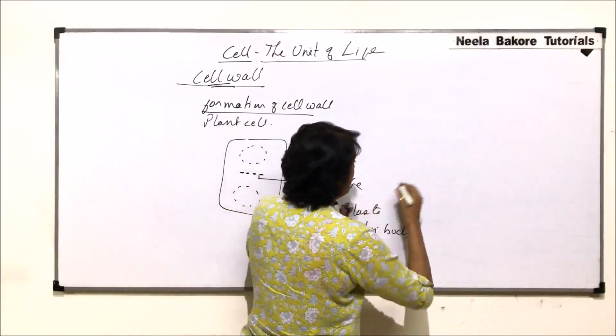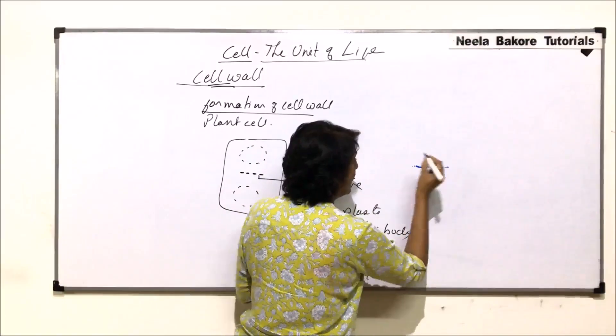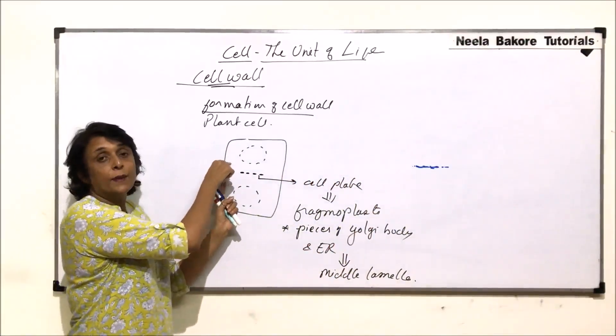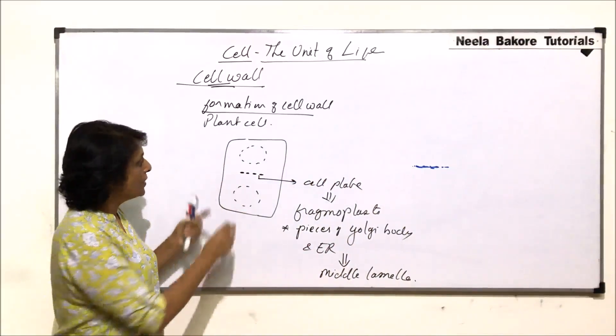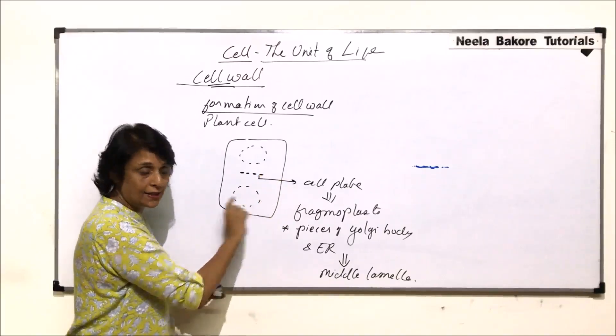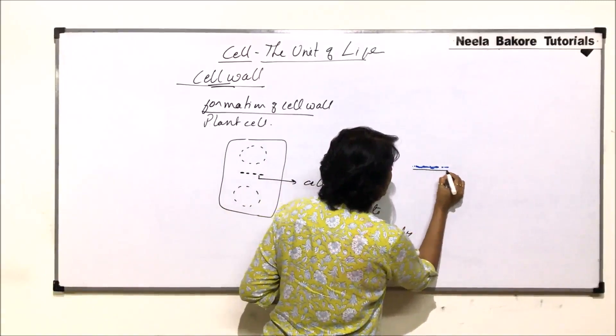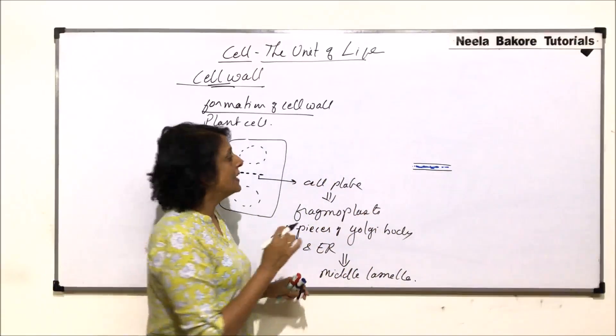Phragmoplasts are going to secrete this calcium pectate containing layer which is known as the middle lamella. So now instead of these phragmoplasts we are going to see this middle pectate layer, that is the middle lamella in the middle. Both the cells now, because they are the ones which will give rise to the daughter cells.